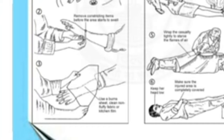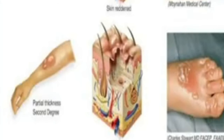Burns को जलने को बोलते हैं। जब हमें कोई dry heat से जलें, तो उसे burn बोलते हैं। वो आग से, किसी flame से, steam से, hot liquid से, hot metal छू लिया, sunlight से sun burn हो गया, electricity या chemical से जल गया — इसको burns कहते हैं।